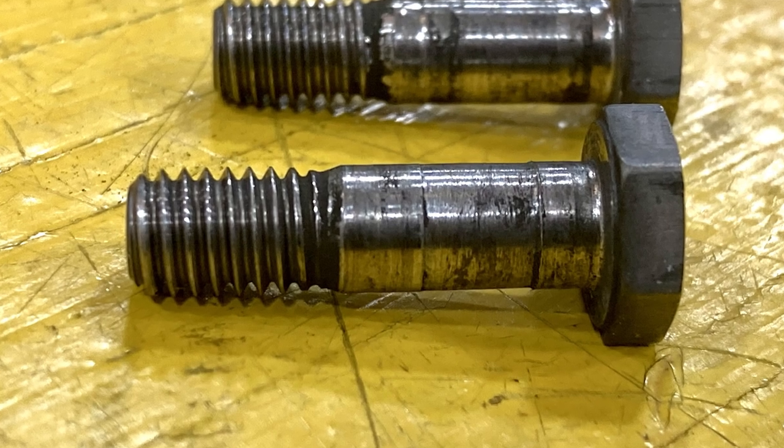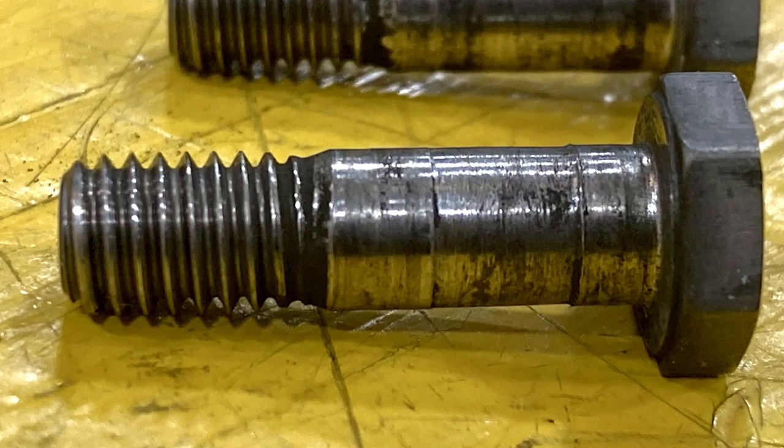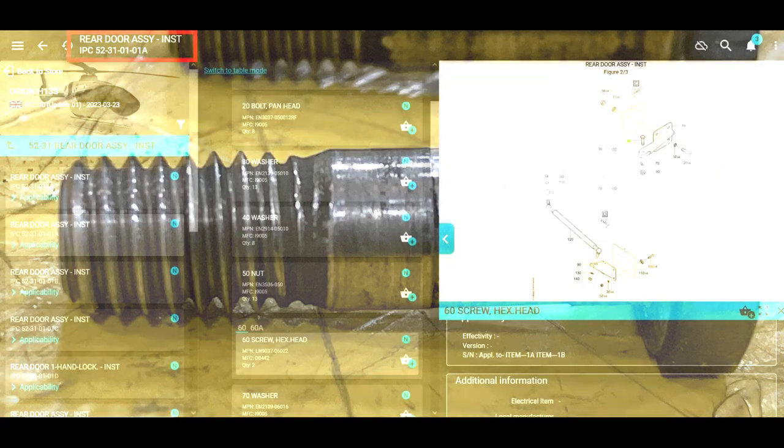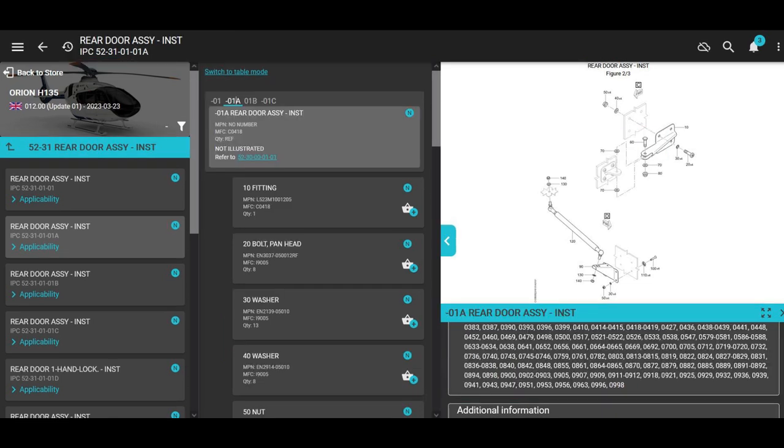And if you're going to do this job, you might as well replace the bolts and you might as well replace the washers and the nut. And this is a rabbit hole right here. Rear door assembly installation, we're in 52-31-01-01 alpha. There's the bolt and the washers and the nut. But if we look at the screw, it applies to 1A and 1B.